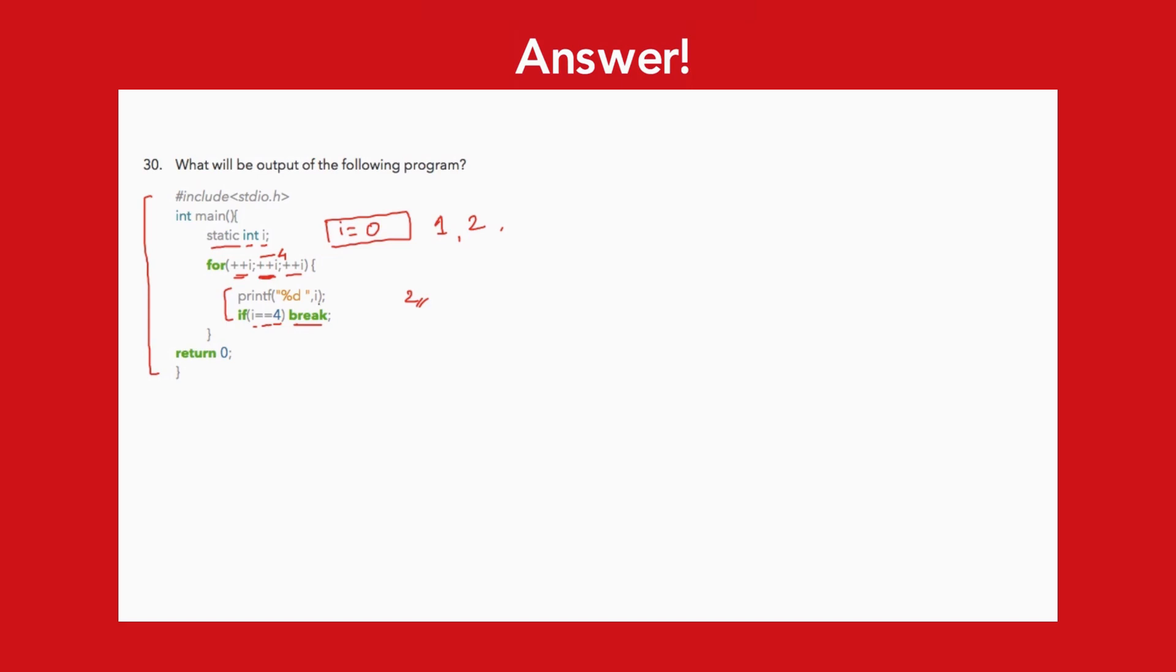So after that, value of i will be printed over here. So 4 will be printed. And because now this condition will be true, i equal to 4 is true, this break will be executed and this for loop will be terminated. And that will end your program. So output of this code snippet is 2 space 4.